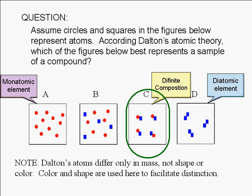A final note, Dalton did not imagine elements as having different shapes or colors. Dalton's atoms are all spherical and they only differ in mass. Color and shape are shown here to facilitate distinction between atoms of different elements.